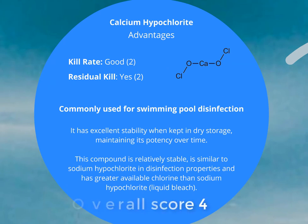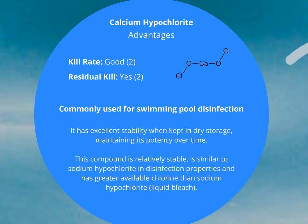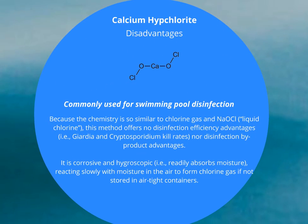Calcium hypochlorite has a good kill rate and residual kill, and is commonly used in swimming pool disinfection. It has excellent stability when kept in dry storage and maintains its potency over time. It's relatively stable, similar to sodium hypochlorite in disinfection properties, and has a greater available chlorine than sodium hypochlorite or liquid bleach. However, it is corrosive and reacts slowly with moisture in the air to form chlorine gas if not stored in airtight containers.